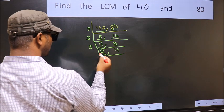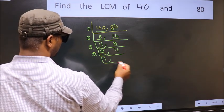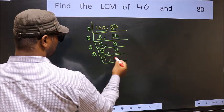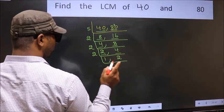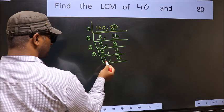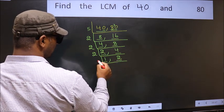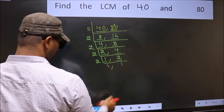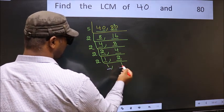Now here we have 2. 2 is a prime number, so 2 times 1 is 2. The other number is 4. When do we get 4 in the 2 table? 2 times 2 is 4. Now we got 1 here, so focus on the other number, 2. 2 is a prime number, so 2 times 1 is 2. We got 1 in both places.